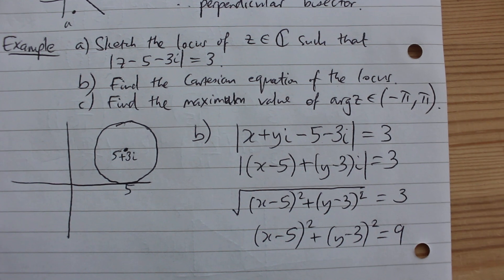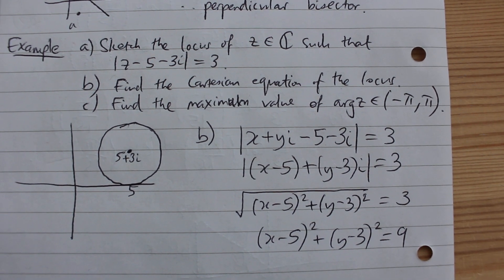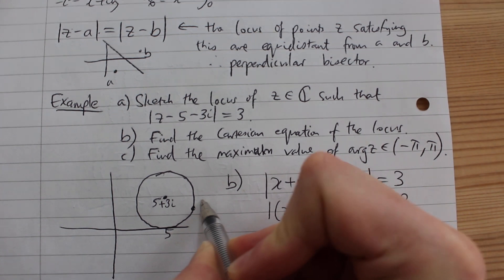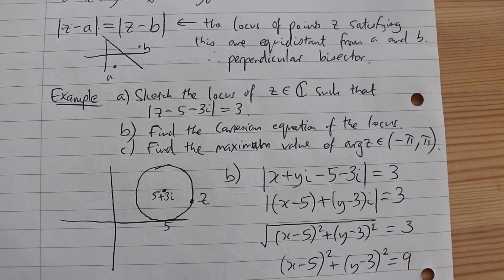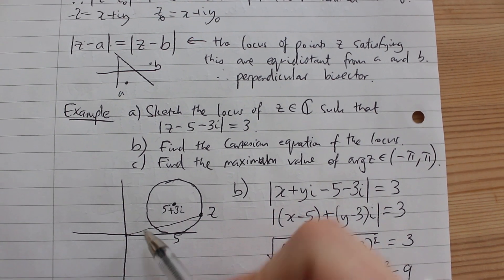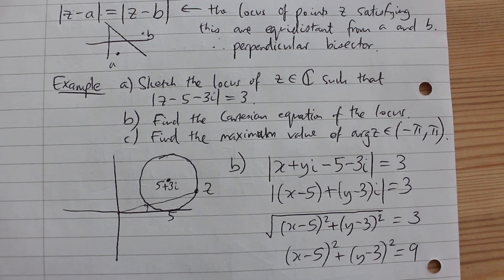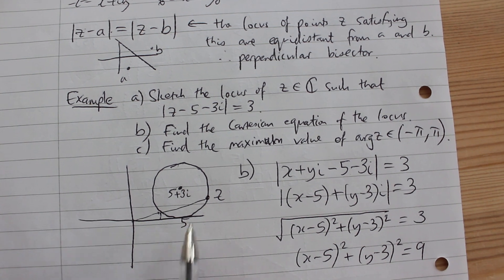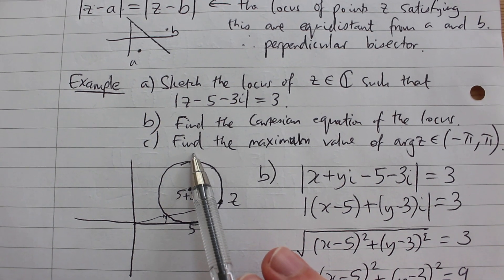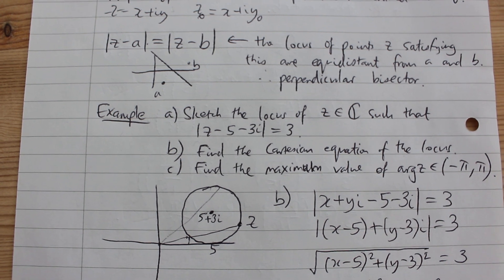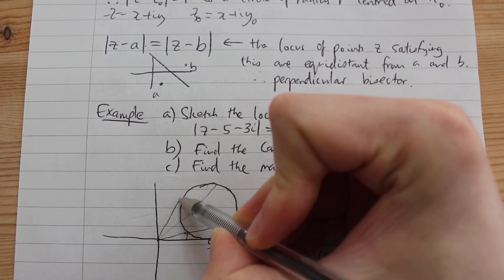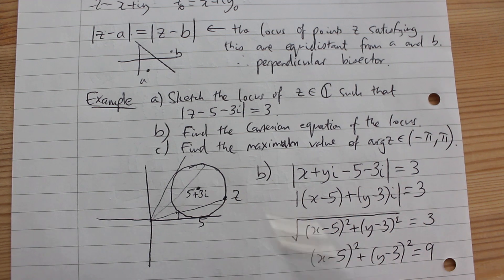Now find the maximum value of the argument of z in the interval minus π to π. The argument is the angle that a complex number z on this circle makes with the positive real axis. For any point on the circle, we draw a line from 0 to z and measure this angle. As we travel around the circle, at the point 5 the argument is 0, it increases as we go round, and the maximum occurs further around.